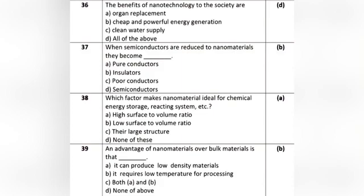Question 15: An advantage of nanomaterials over bulk material is that — Option A: it can produce low density materials. Option B: it requires low temperature for processing. Option C: both A and B. Option D: none of the above. The correct answer is Option B: it requires low temperature for processing.